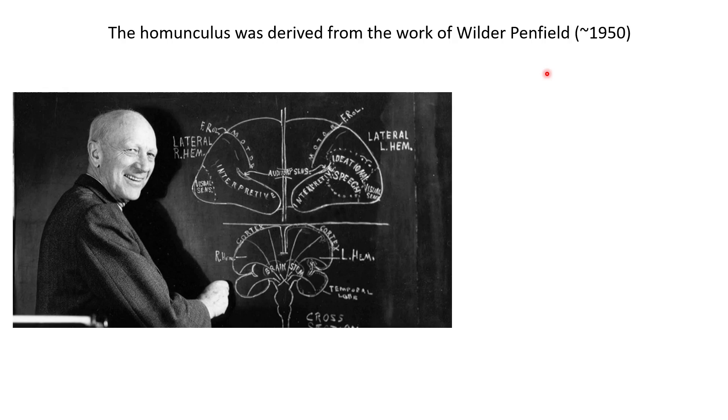Now let's try to understand how the homunculus was derived — how we got this mapping that we saw on the previous slides. This was actually made possible by the work of Wilder Penfield around the 1950s. Wilder Penfield was a Canadian neurosurgeon working with patients. Before discussing what experiments he did to make this mapping, take a moment to think about what he could have done to find out this mapping between different body parts and the somatosensory or motor cortex.